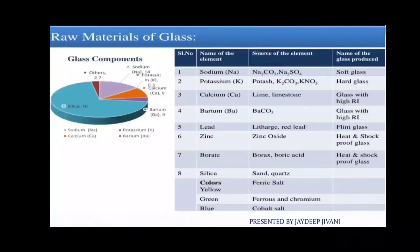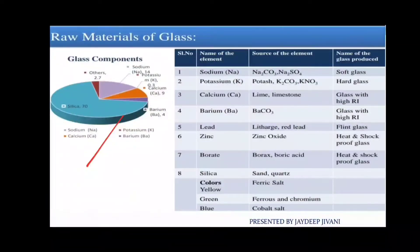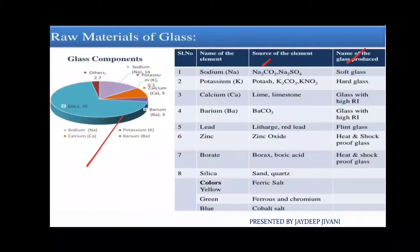This is all about the composition of glass. Here there is a table for the different types of elements, which source they are obtained from, and which type of glass is manufactured using those raw materials or elements.